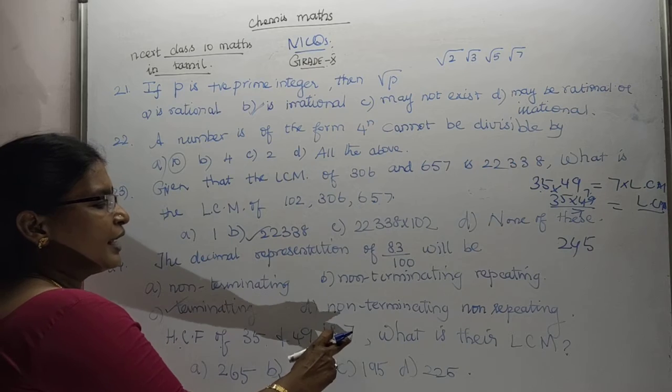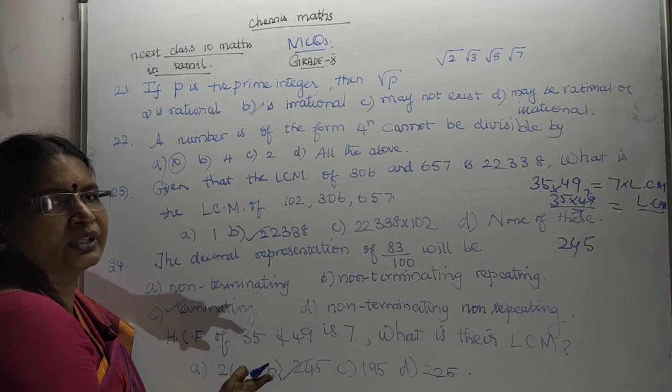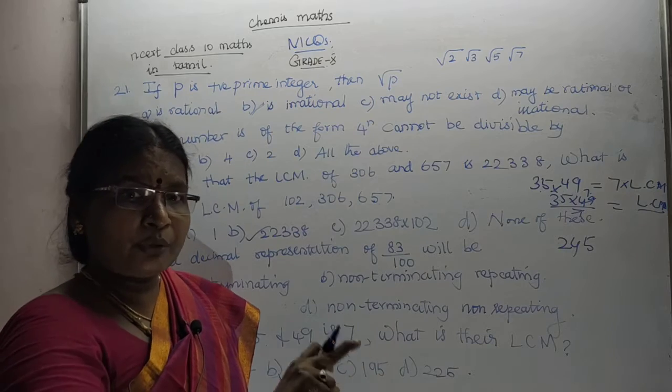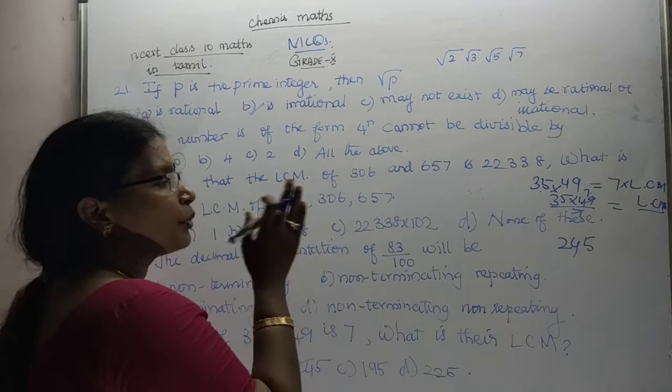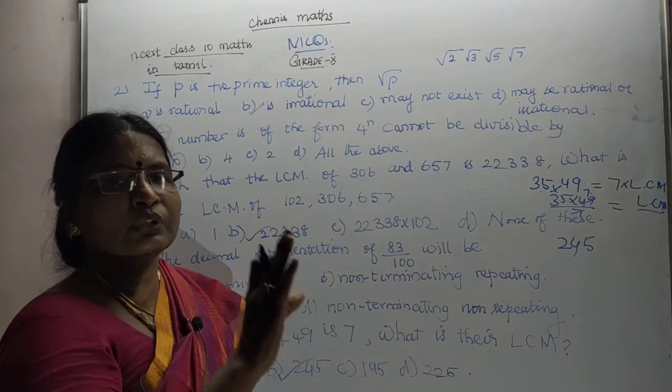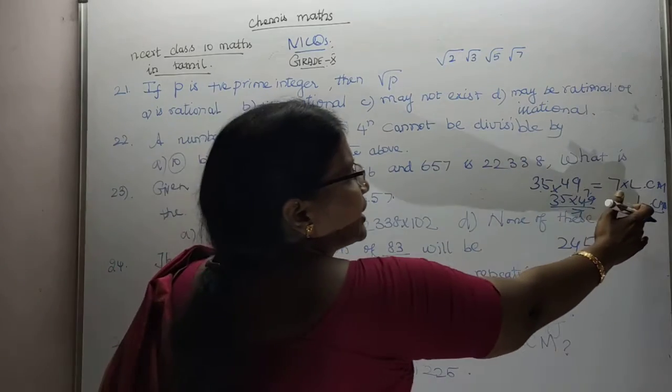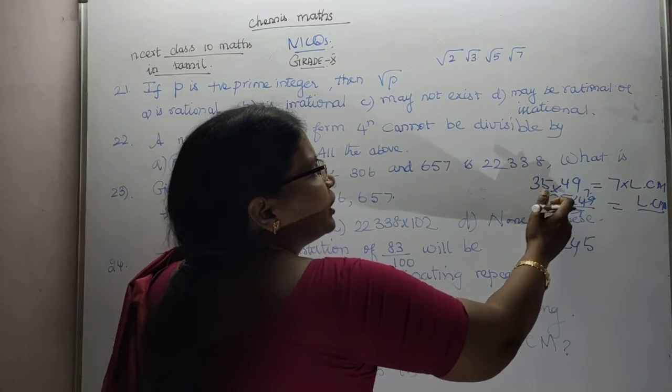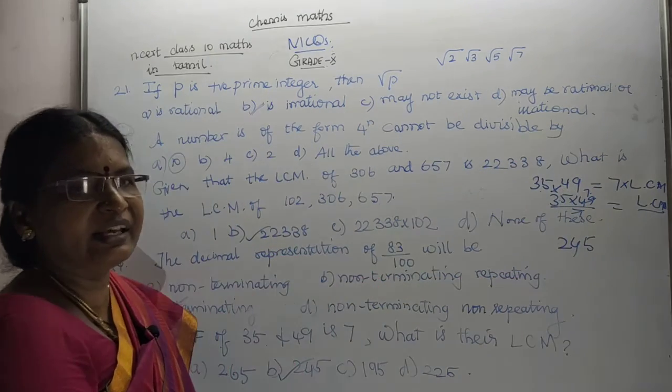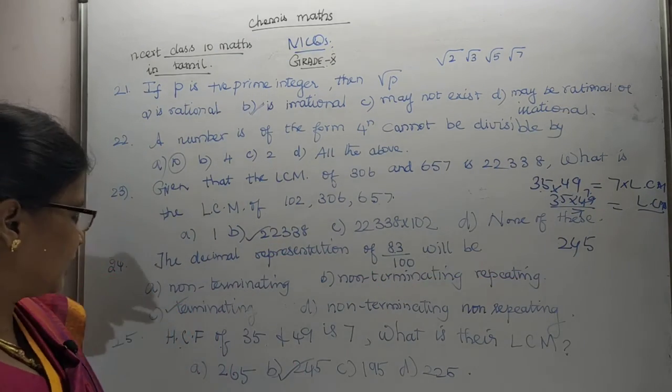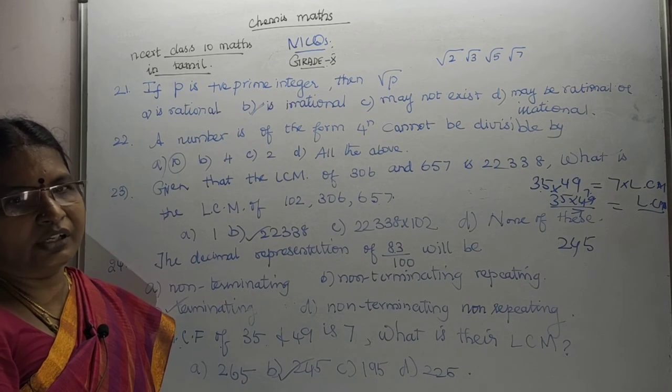1 number is equal to LCM and HCF. 2 number. 1 number is equal to, why do we get it? You have to apply this formula alone. Product of the numbers is equal to LCM into HCF. You will get the answer. Understood? Yes, thank you. This is the application of one math sums. Understood? Thank you.